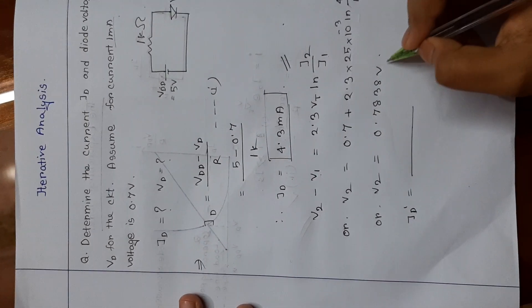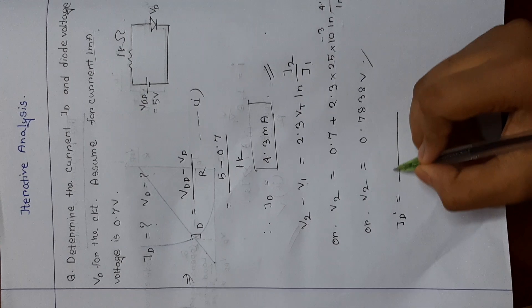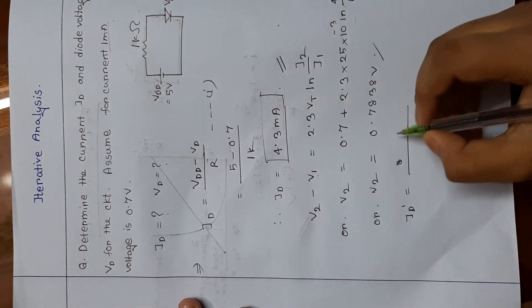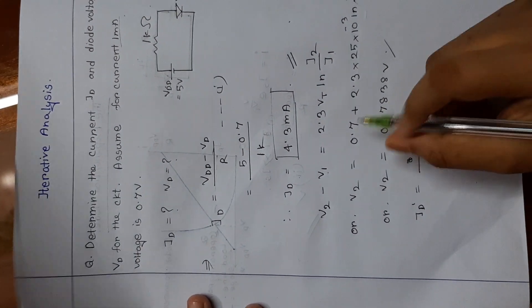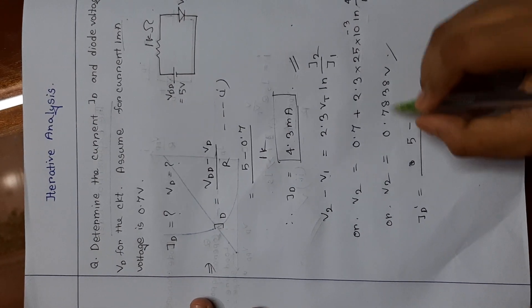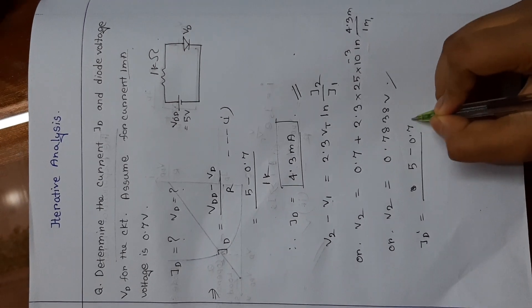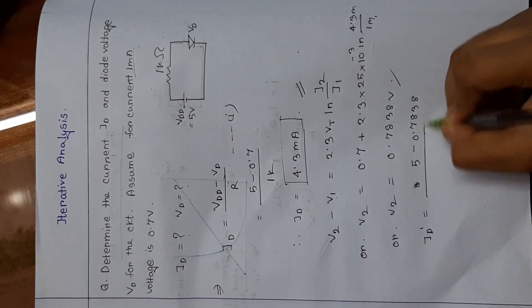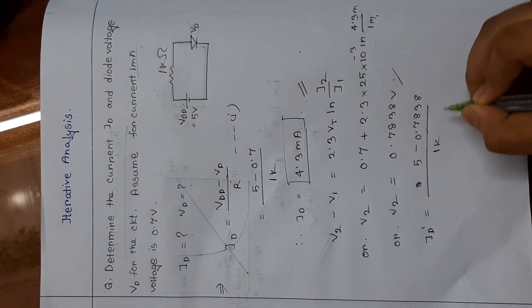So we have to again take this V voltage, and Vdd is the constant, that is 5 volt, and minus, we have to now take 0.7838 volt as voltage, and the resistance as 1 kilo ohm.